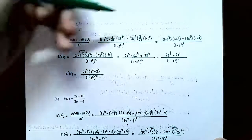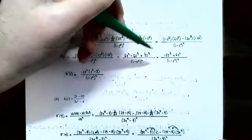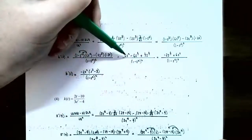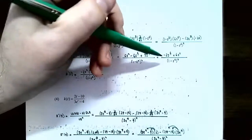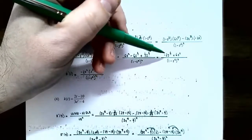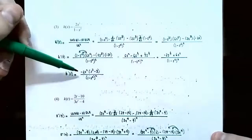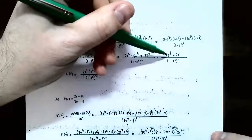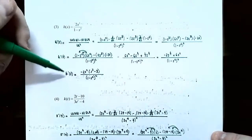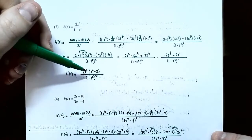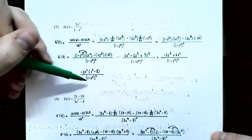Distributing: 6s squared times 1 is 6s squared, 6s squared times s squared gives negative 6s to the fourth. Then negative 2s cubed times negative 2s gives positive 4s to the fourth. Combining like terms: negative 6s to the fourth plus 4s to the fourth is negative 2s to the fourth, plus 6s squared, all divided by 1 minus s squared, all squared. Factoring out negative 2s squared from the numerator: h prime of s is negative 2s squared times (s squared minus 3), divided by 1 minus s squared, all squared.